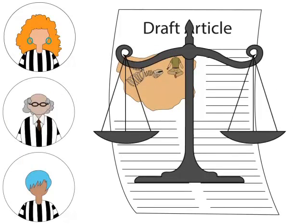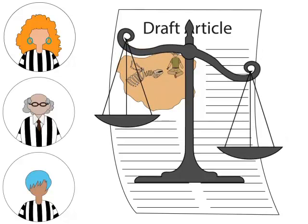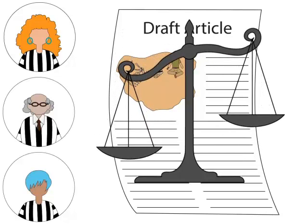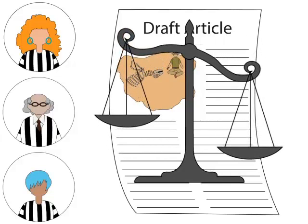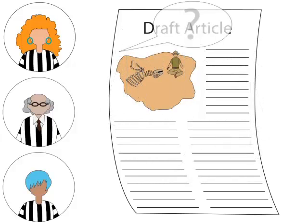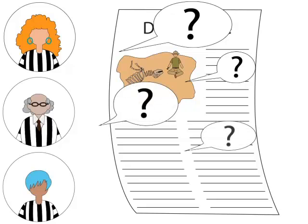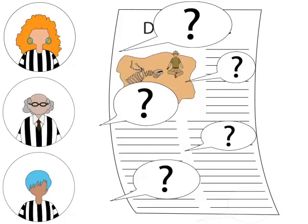Each reviewer evaluates the article by asking questions to judge the quality and significance of the research. Questions like: What is this research about? Is it interesting? Is it important? Is the methodology sound? Are the conclusions logical? And, are the findings original?